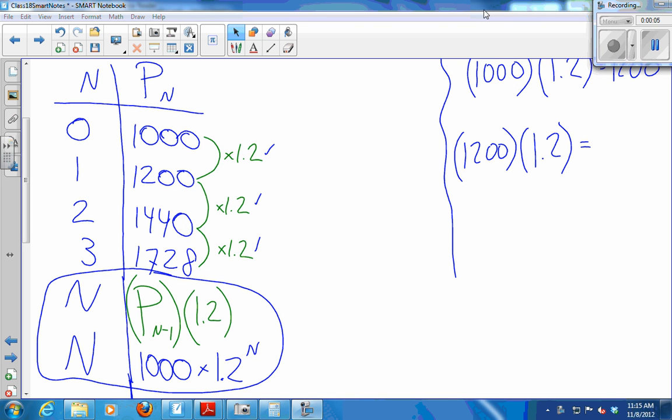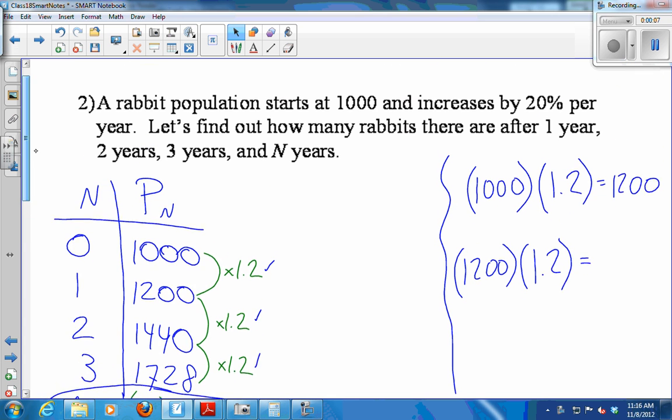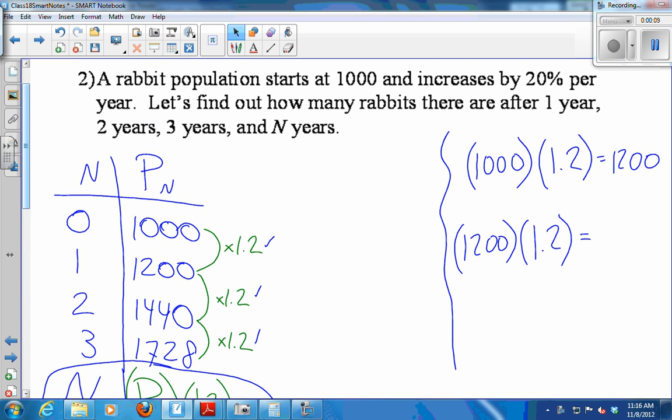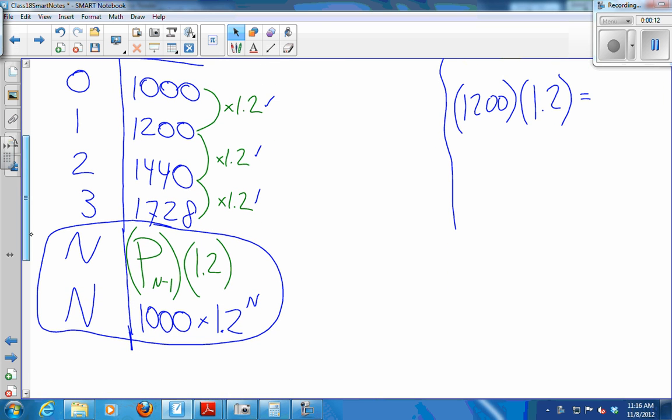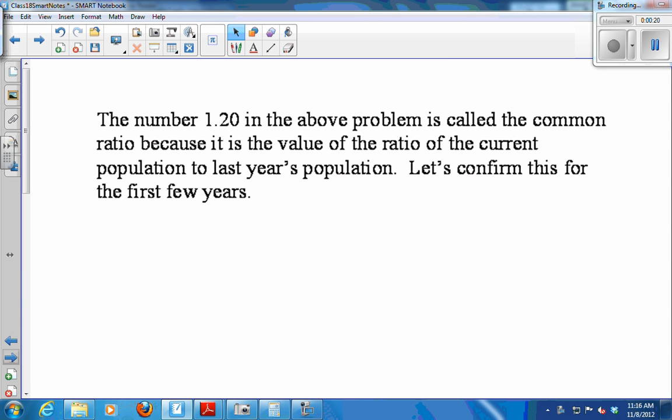We have come up with a table of values for the population of rabbits at year 1, 2, and 3, and then recursive and explicit formulas for year N. So that number 1.2 we call the common ratio because it has the value of the current population to last year's population. If you take the ratio of any population to the year before it, you get 1.2.